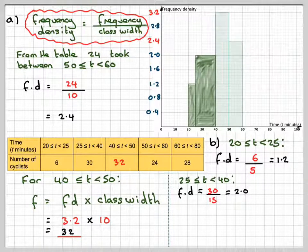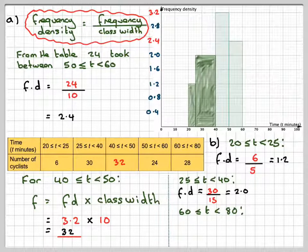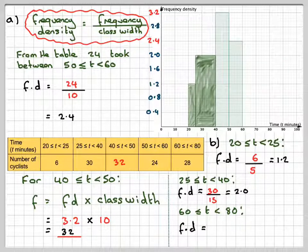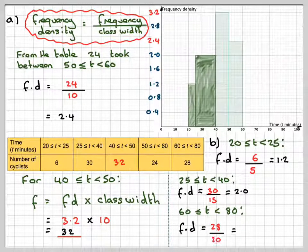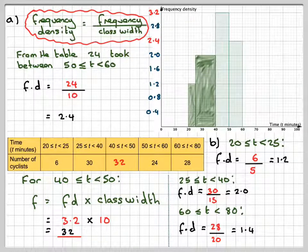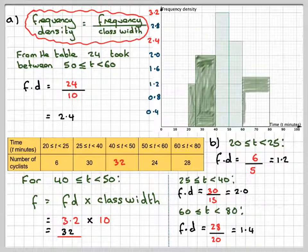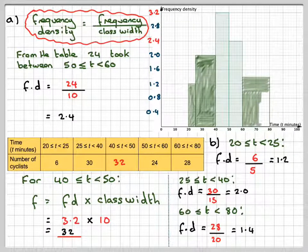And then for the last one, between 60 and 80, that's a class width of 20. So the frequency density will be 28 divided by 20, which gives me 1.4. So 1.4 is going to be halfway between 1.2 and 1.6. You need to be quite accurate when you do this. So there is the completed histogram.